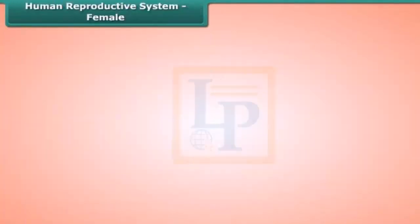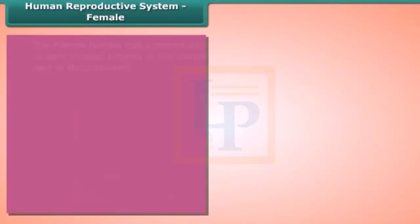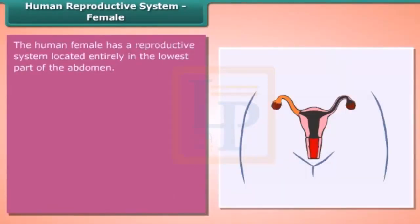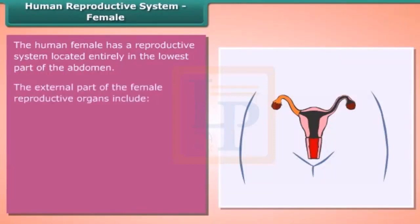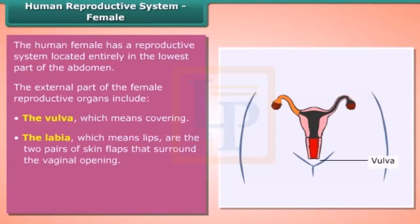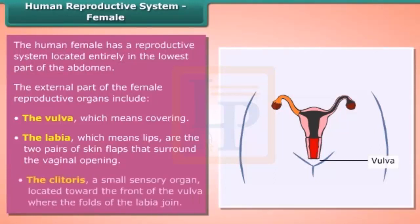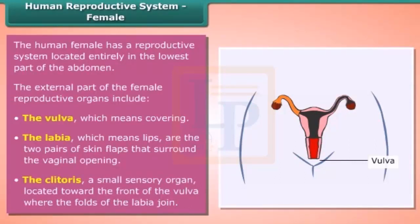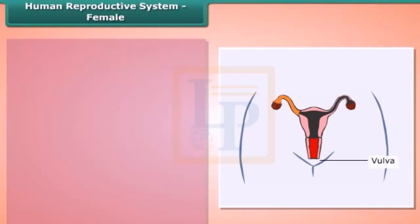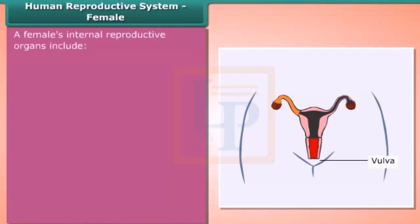The human female reproductive system is located entirely in the lowest part of the abdomen. The external parts include the vulva, meaning covering; the labia, meaning lips, which are two pairs of skin flaps surrounding the vaginal opening; and the clitoris, a small sensory organ located toward the front of the vulva where the folds of the labia join.